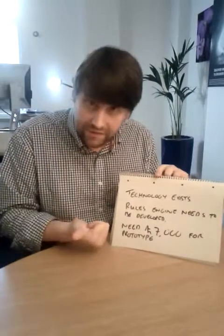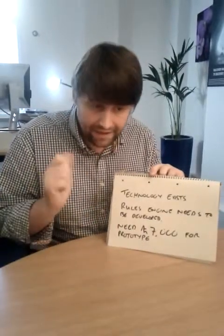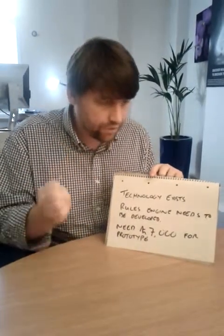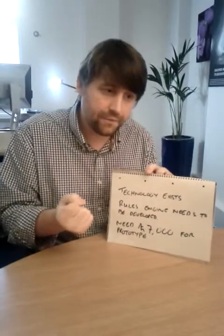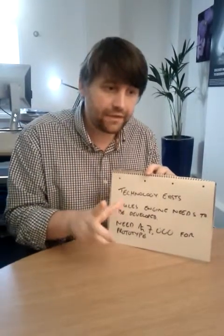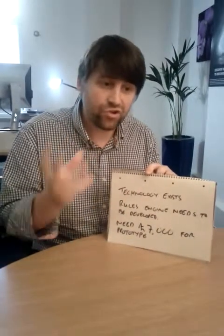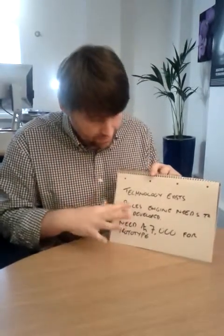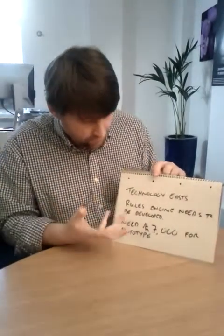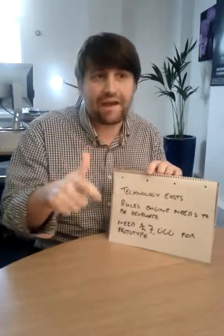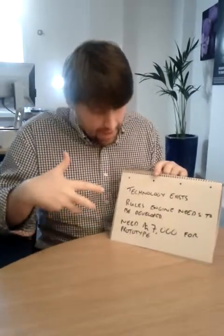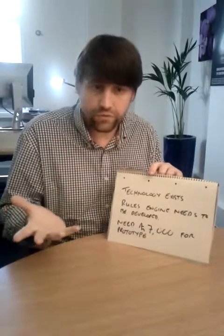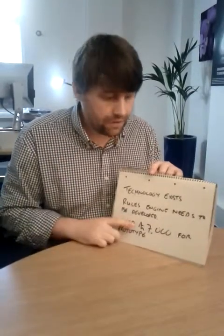The technology exists — Evernote and the APIs are already there. The work required is a matter of finding the right API to semantically mine the text, making sure we can train it to suit our purposes and pick out the things that are relevant to us. Then we need to develop a rules engine to recognise tags and trigger certain actions. That's relatively simple technology — there's plenty of rules-type technologies out there which we can reuse.